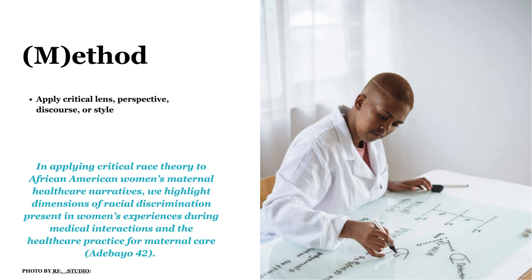An example of a method source from science could be citing an article from a peer-reviewed journal about a study that applies the same standard methodology as a previous research study used to answer new research questions. In both cases, using a method source in writing is potentially adding new research to the popular discourse or discussion around these topics and keeps the research cycle going.